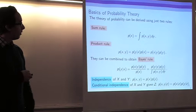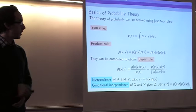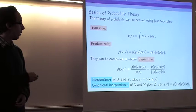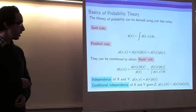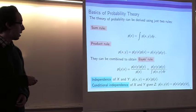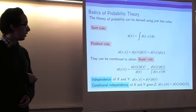These two rules can also be combined to obtain Bayes' rule, derived from the sum and product rule. We multiply and divide by p(x): the conditional distribution of y given x is just the conditional distribution of x given y times its marginal divided by the marginal of x, which can be expressed using the sum rule as an integral over the joint. Throughout this course we will consistently use Bayes' rule to compute predictions.